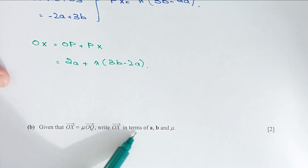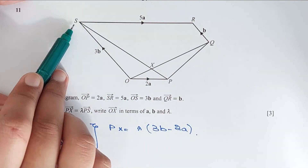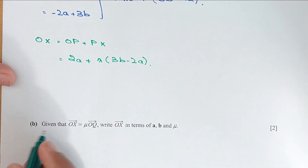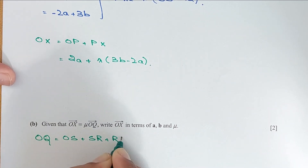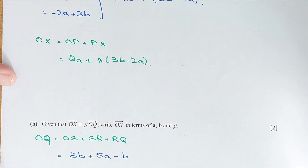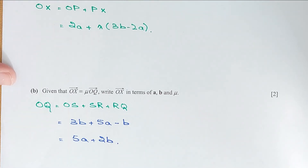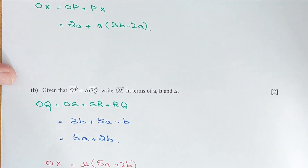Part b: given OX equals μ times OQ, write OX in terms of a, b, and μ. OQ equals OS plus SR plus RQ equals 3b plus 5a plus (minus b) — wait, following the path: OQ equals OS plus SR plus RQ equals 3b plus 5a minus b equals wait — OQ equals 5a plus 2b. So OX equals μ(5a plus 2b).